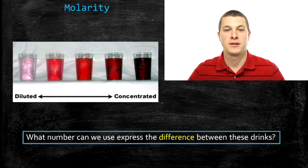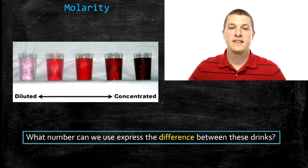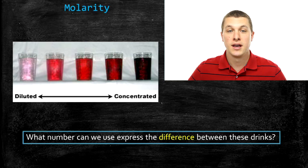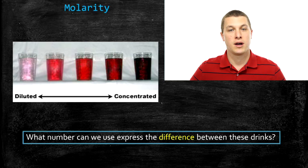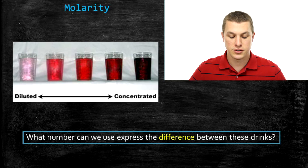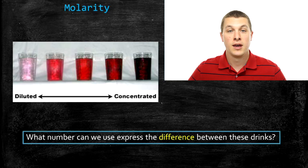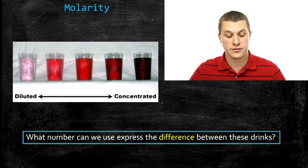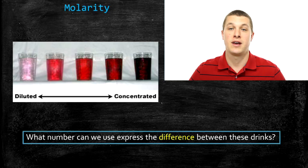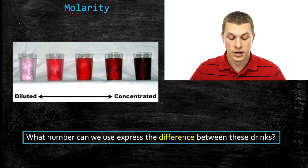Today on Real Chemistry, we're going to talk about something called molarity. What's molarity? Well, it's a measurement of what you might call concentration. And to get a handle on what concentration is, you can see there's a range of drinks on this slide. They go from really, really light pink to really, really dark red. You can imagine that these are all Kool-Aid, and the difference between all these different drinks is how much of that red powder we used when making them.